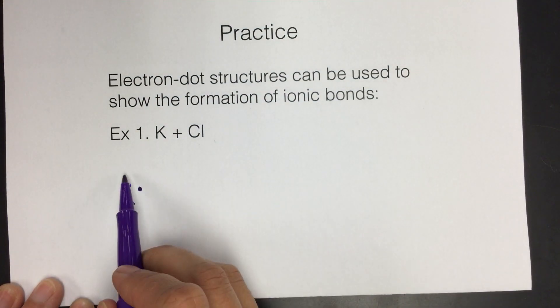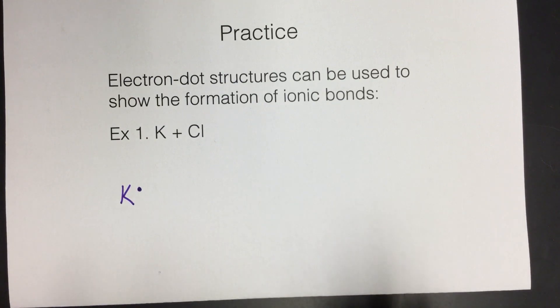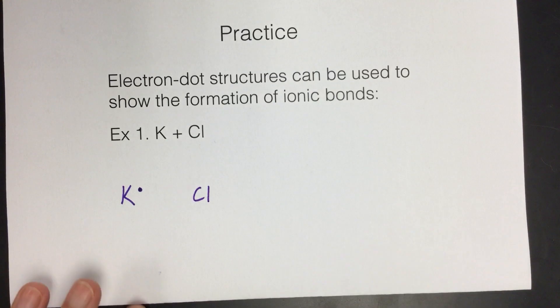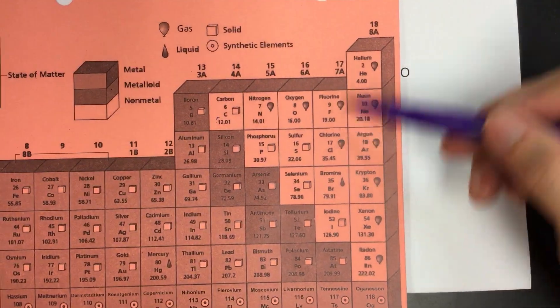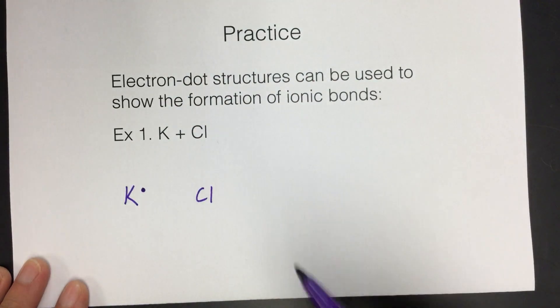Remember, it doesn't matter if you put it on the top, the right, the bottom, or the left, but you can only have one. Then I'm going to draw Cl for chlorine. I need to put the valence electrons around chlorine. Chlorine is in group 7A, so it has seven valence electrons.